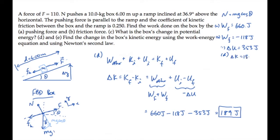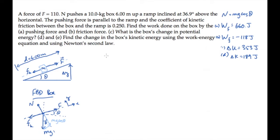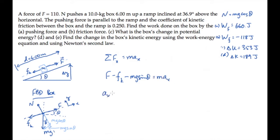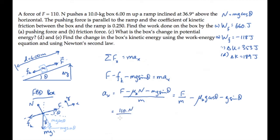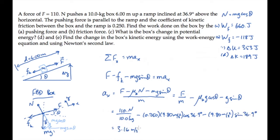Part E asks us to calculate the same quantity using Newton's second law, sum of the forces equals ma. Taking this in the x direction up the ramp and adding forces from the free body diagram: the pushing force minus the friction force minus the component of weight, that's mg sine theta, equals mass times acceleration up the ramp. Solving for the acceleration, rearranging, substituting our expression for the normal force, and calculating with all known values, we find that the box's acceleration as it moves up the ramp is 3.16 meters per second squared.